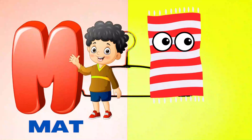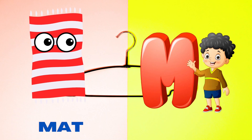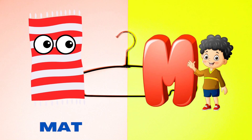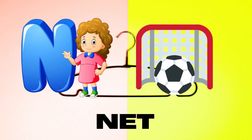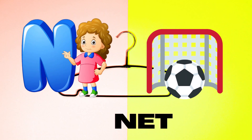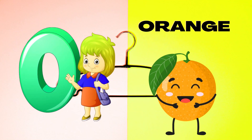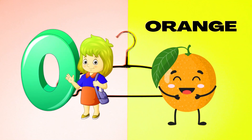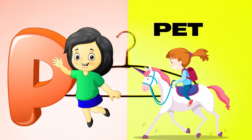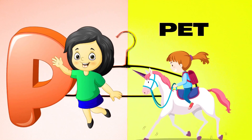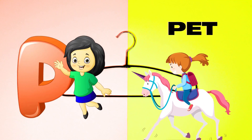M is for Mat, M-M-Mat. N is for Net, N-N-Net. O is for Orange, O-O-Orange. P is for Pet, P-P-Pet.